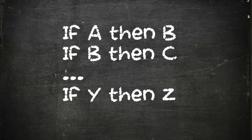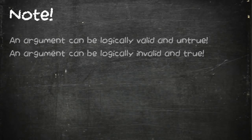Before we get into the examples, it's important — especially for newcomers — to note that I make absolutely no value judgments in this analysis. I am simply looking at the underlying logic. It does not actually matter if you have a particular stance on any of these issues, some of which are quite contentious. Also worth remembering: an argument can be both logically valid and untrue, or logically invalid and true.